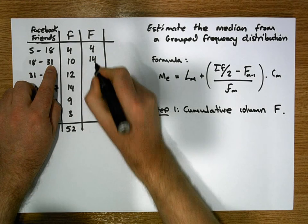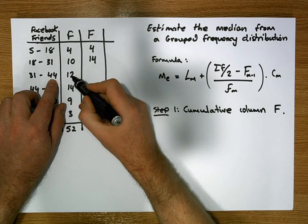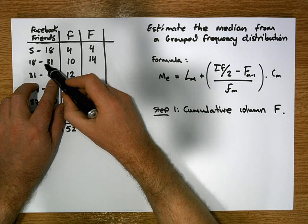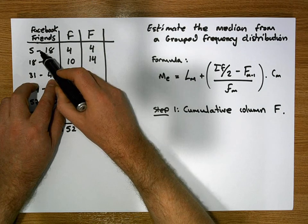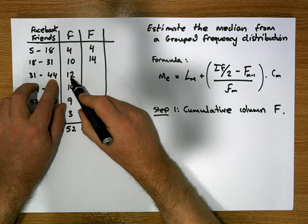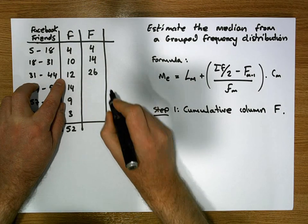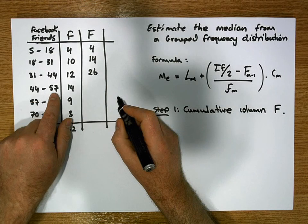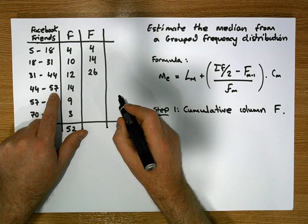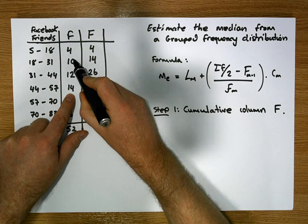How many are less than 44? Well, there's 12 in this class, the 10 in the previous one, and the four in the previous one to that. So that's the same as 12 plus 14, which gives us a value of 26. How many are less than 57? Well, we have 14 plus 12 plus 10 plus 4, which gives us a value of 40.